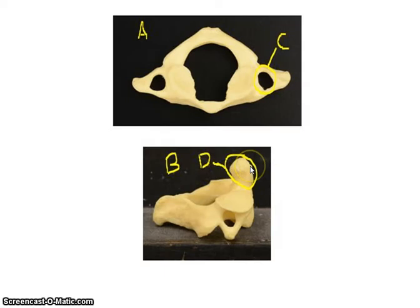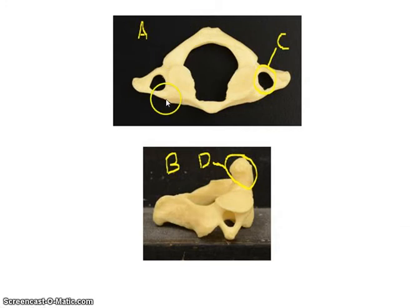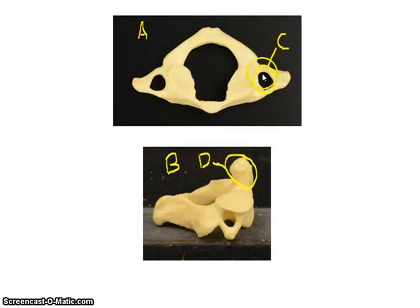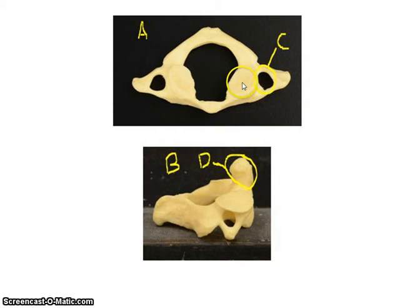Looking at the cervical vertebrae — and there are seven, which you need to know — the first two have specific names you must know. The first cervical vertebra is called the atlas. One way to identify a cervical vertebra is by the transverse foramen, which is unique to cervical vertebrae. This first one is called the atlas — think of Atlas holding up the world; this holds up your head.